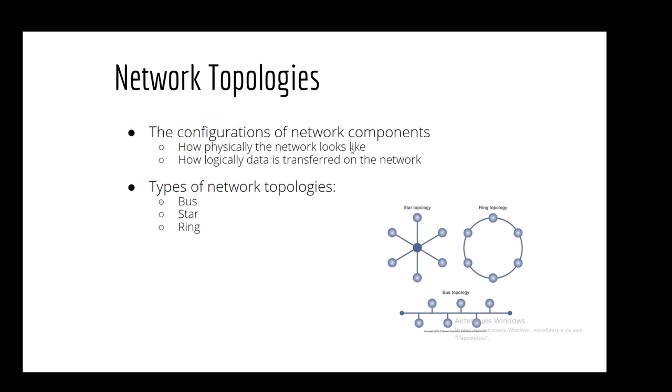So our next part of our lecture is network topologies. Actually, network topologies, let's talk first about its configurations. So the configurations of network components, there are two. First, it's how physically the network looks like. And secondly, how logically data is transferred on the network. Main types of network topologies are bus, star, and ring. In this picture you can see how they are connected with each other. For example, first it's star topology. Next, it's ring, and the last, it's bus topology.